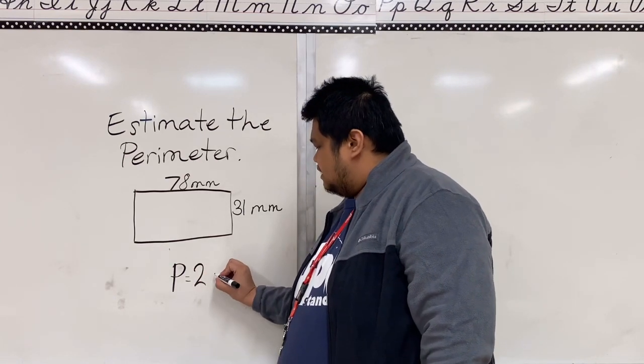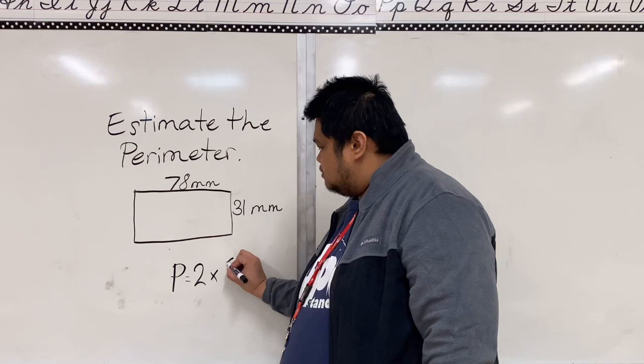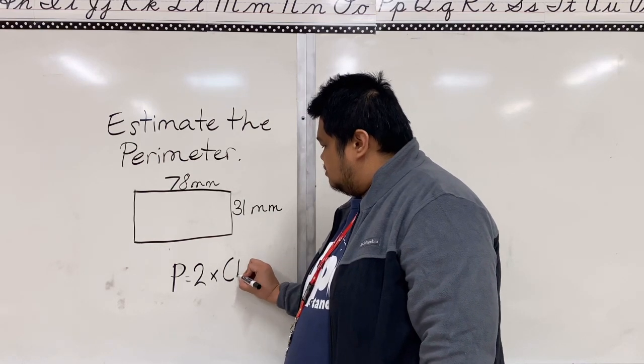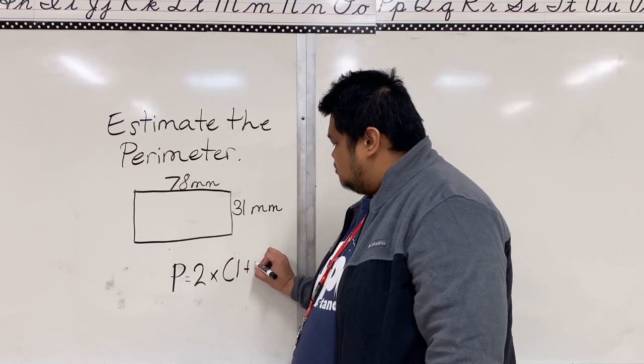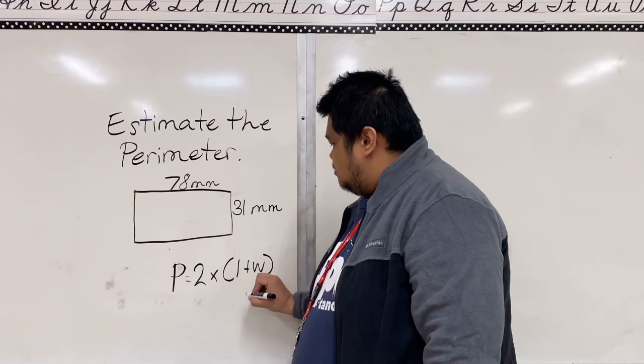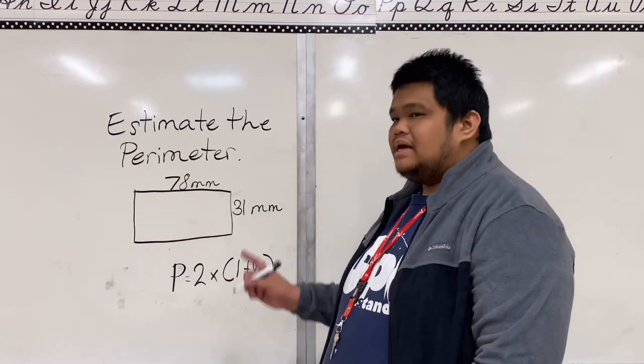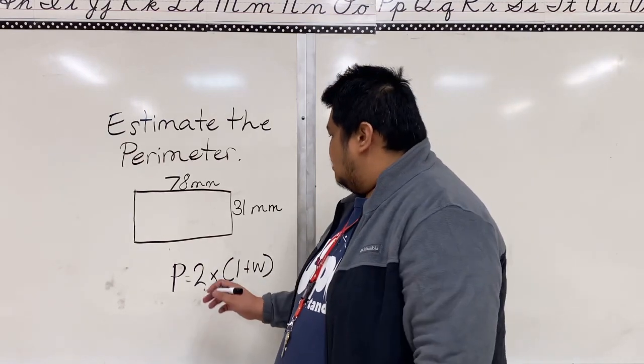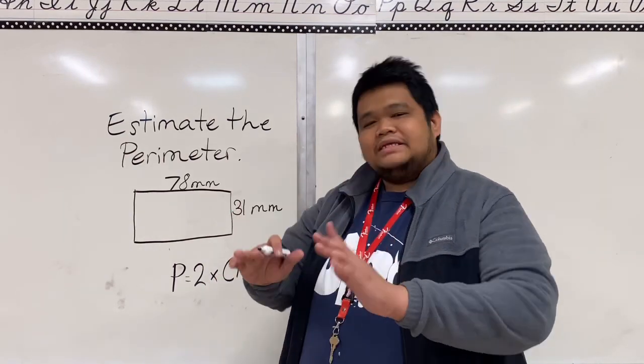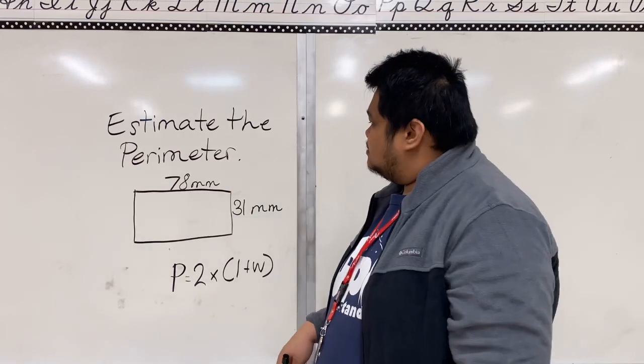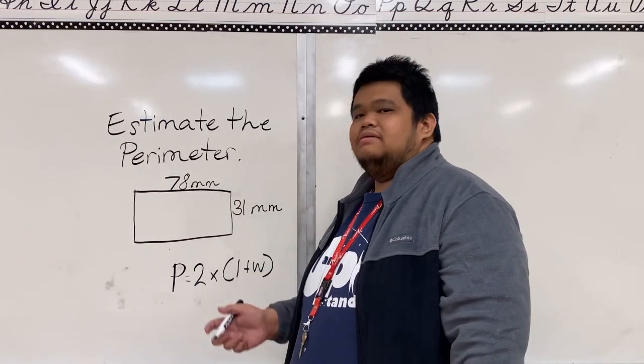P is equals to two times the length plus width. Now what is our length here? Let's round them off first to the nearest tens.